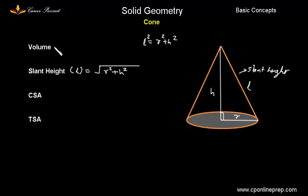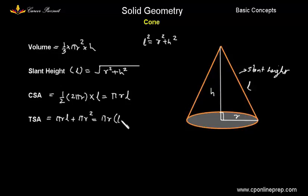So slant height L is equal to under root of R square, that is the radius of the base, plus square of the height. Now formula for the volume is one third area of the base which is pi R square into height. Slant height we have already taken. Curved surface area would be half the perimeter of base, so half of 2 pi R - this is the circumference of the base which is nothing but the perimeter into slant height which is L. Solving it we will be getting pi R L. And total surface area is curved surface area, that is pi R L, plus the area of the base which is pi R square. Taking pi R common we will be getting the formula as L plus R. So these are the formulas which we can fit if we know the general formula of pyramid.